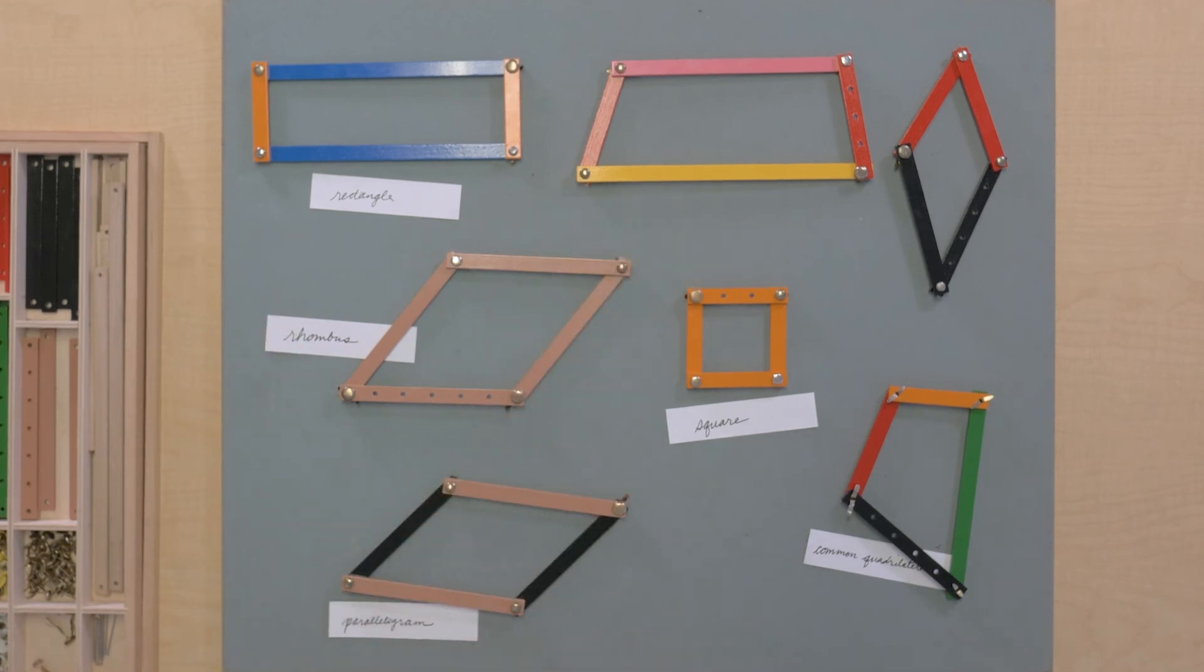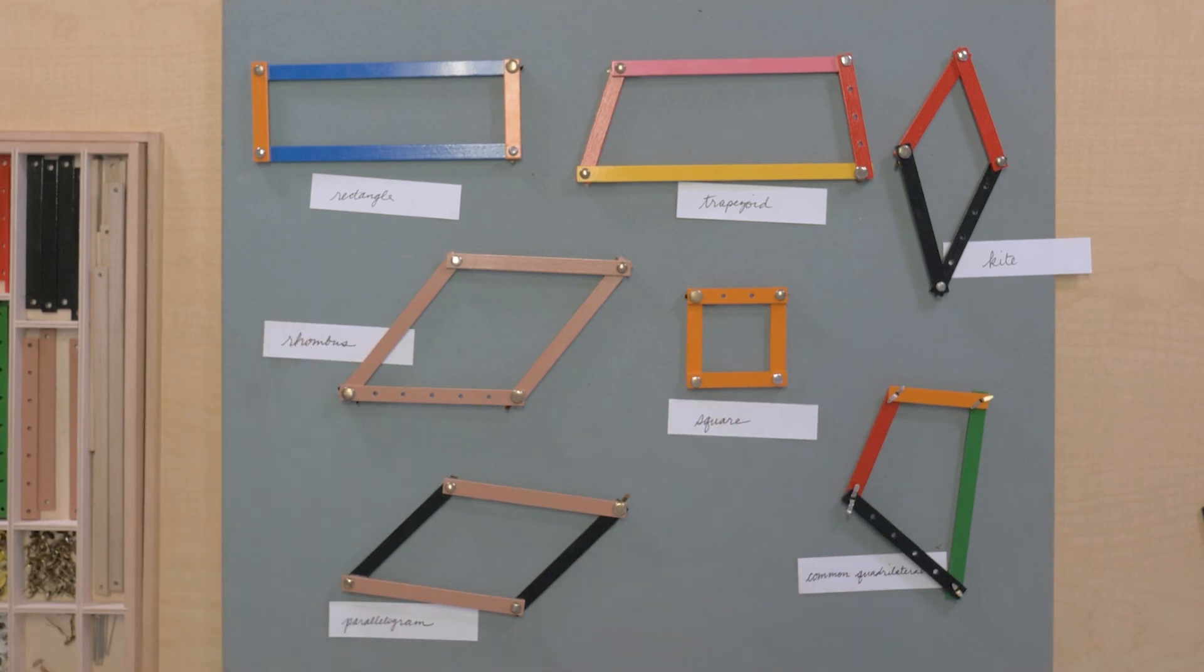This one is a trapezoid, and we have a kite. I wonder if I mix these up if you could place them again, or we could try to make more of some of these shapes.